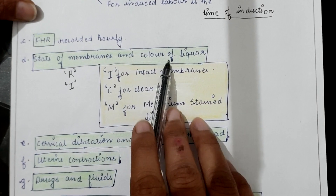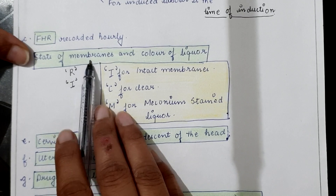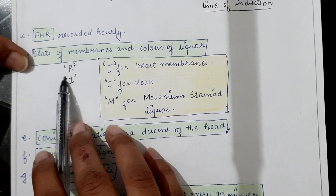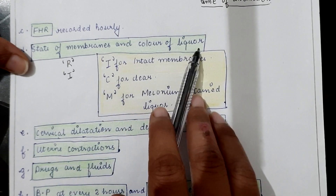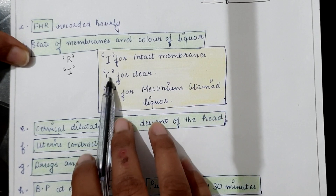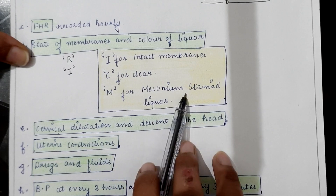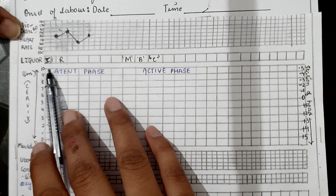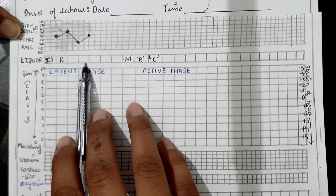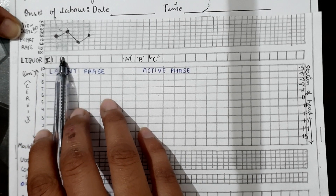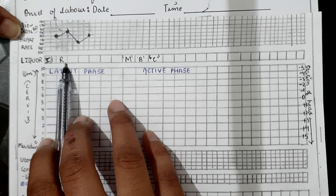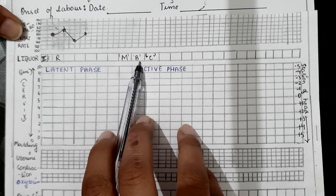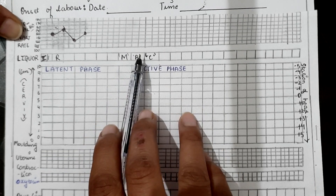Next is the state of membranes and color of liquor. Mark the state of membranes: if ruptured, mark R; if intact, mark I. For color of liquor: if clear, mark C; if meconium stained, mark M; if blood stained, mark B. In the partograph, next to fetal heart rate, mention the status of membranes and color of liquor. You should write only one letter according to your observation.